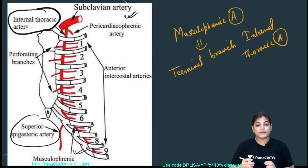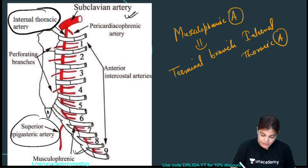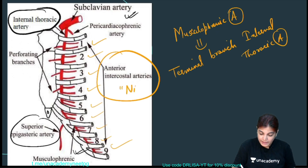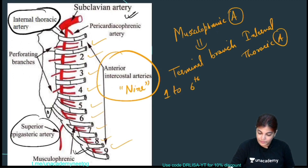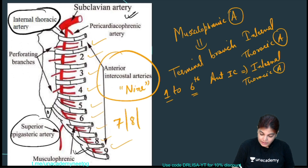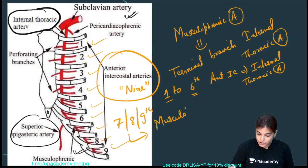One important branch of the musculophrenic artery is that it gives rise to anterior intercostal arteries. There are a total of nine anterior intercostal arteries — for the first through ninth intercostal spaces. Of these, the 1st to 6th anterior intercostal arteries are branches of the internal thoracic artery, while the 7th, 8th, and 9th anterior intercostal arteries are branches of the musculophrenic artery.